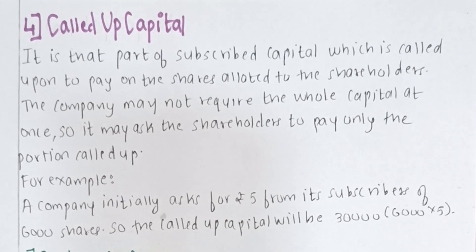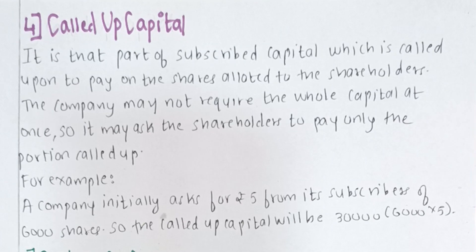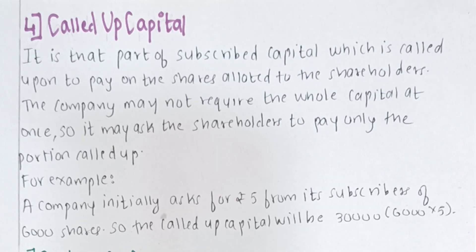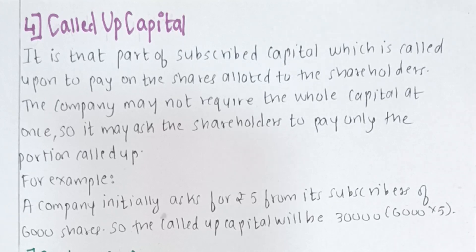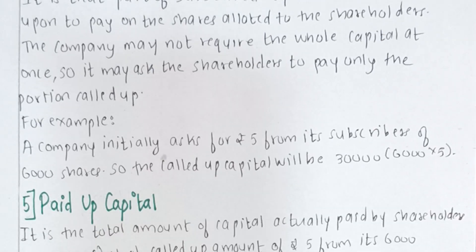Moving on to called up capital — it is that portion of the subscribed capital that comprises the shareholders' payment. The capital is not collected from shareholders all at once; the company calls for it in installments as required. For example, if a company initially asks for rupees 5 from its subscribers of 6,000 shares, the called up capital will be rupees 30,000 (6,000 × 5).